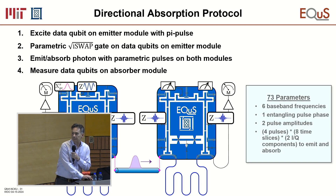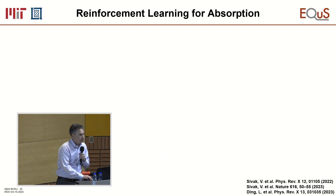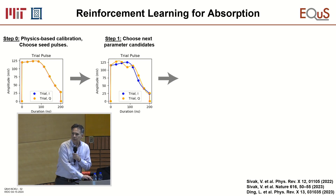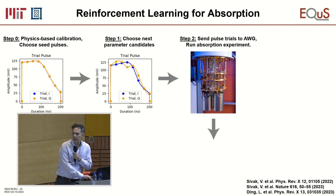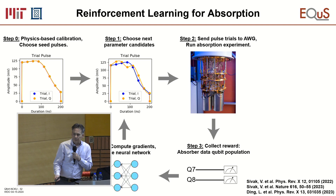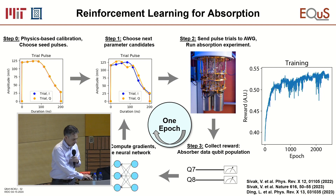There are 73 different parameters, and we use reinforcement learning to tune them all — Aziza did it by hand once and then thought there might be a better way. You start with a physics-based pulse, send it down, run the experiment, and define a reward based on how well the photon was absorbed. That reward is used to update a neural network, compute gradients, and determine the next trial. Over many epochs you increase the reward, getting closer and closer to the ideal situation.